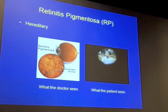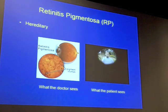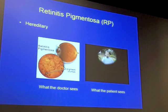You see this tunnel of vision effect where the periphery of your visual world is shrinking. You still have intact vision in the center, and then, unfortunately, eventually that goes away too.